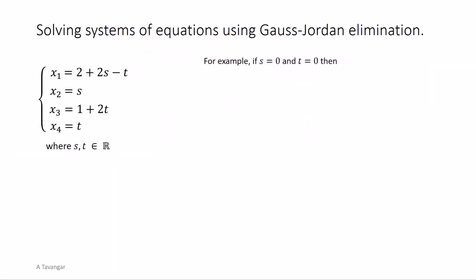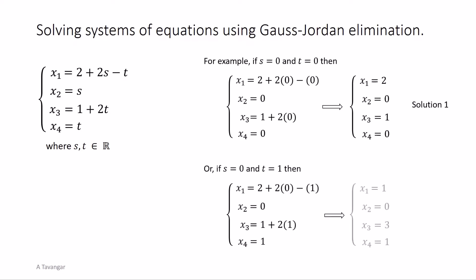For example, if you select both s and t to be zero, one solution will be x1 equals 2, x2 equals 0, x3 equals 1, and x4 equals 0. Or if you select s to be zero and t equals 1, another solution will be x1 equals 1, x2 equals 0, x3 equals 3, and x4 equals 1. Therefore, this system has infinitely many solutions. Thank you.